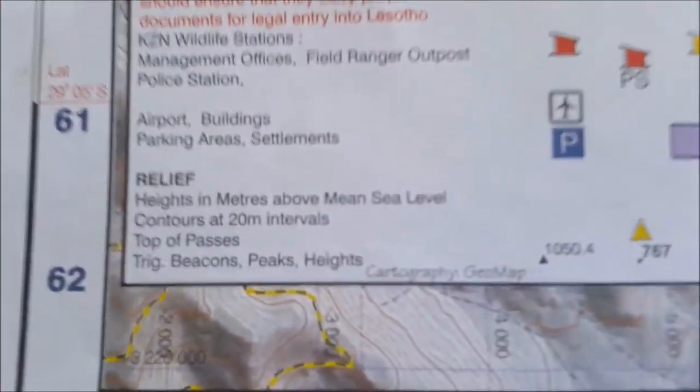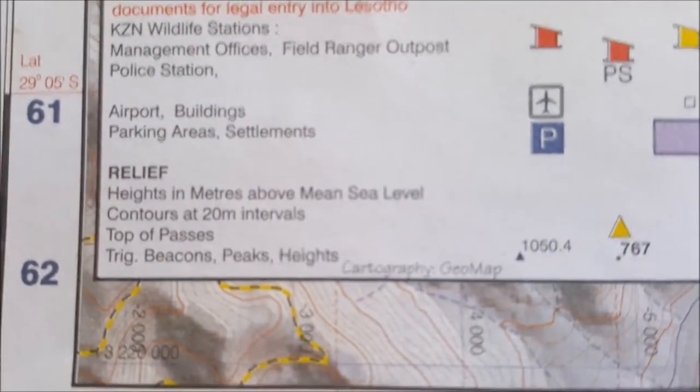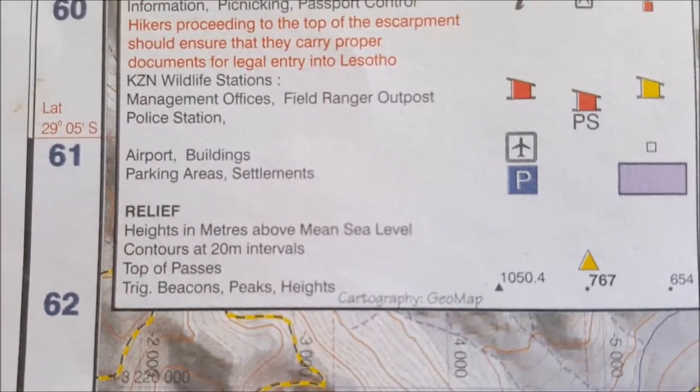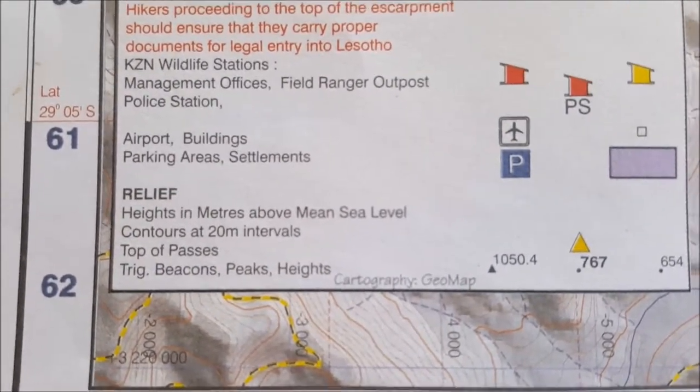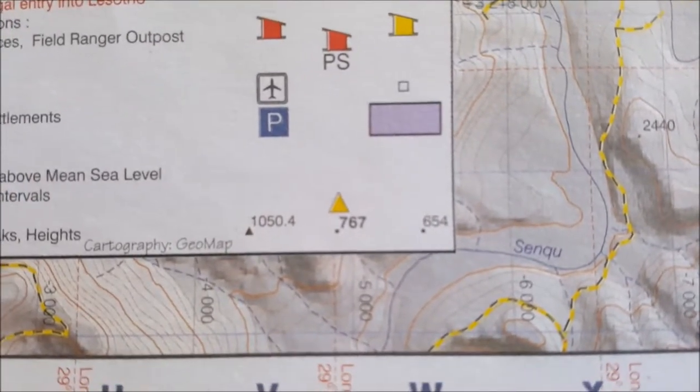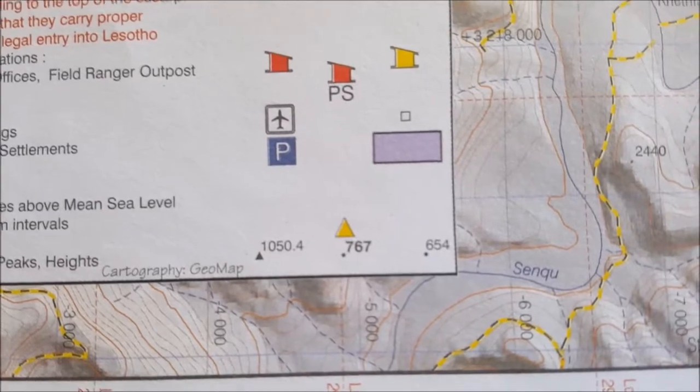It will also give you information such as the height in meters above sea level, contours, how far they are spaced. In this case it's 20 meter intervals. They'll also give you an indication of what peaks and beacons and heights look like on the map.